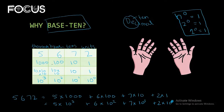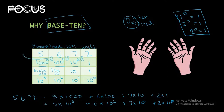Every column is 10 times more than the previous column. That means 1000 is 10 times more than 100, 100 is 10 times more than 10, and 10 is 10 times more than 1. If I multiply 1 by 10, then 10 will come. If I multiply 10 by 10, then 100 will come. And if I multiply 100 by 10, then 1000 will come. This factor is 10 — this is our base-10 number system.